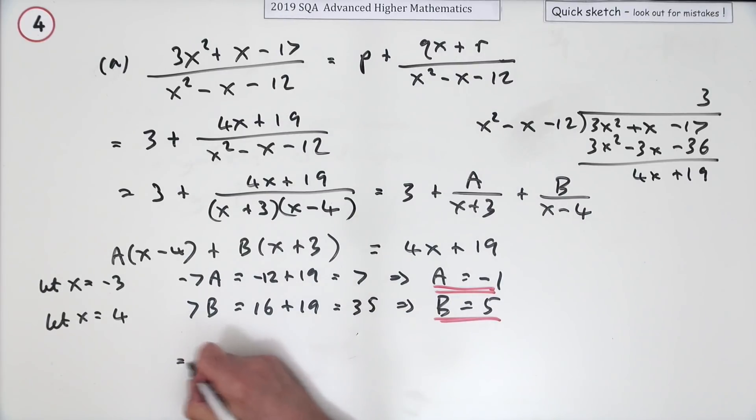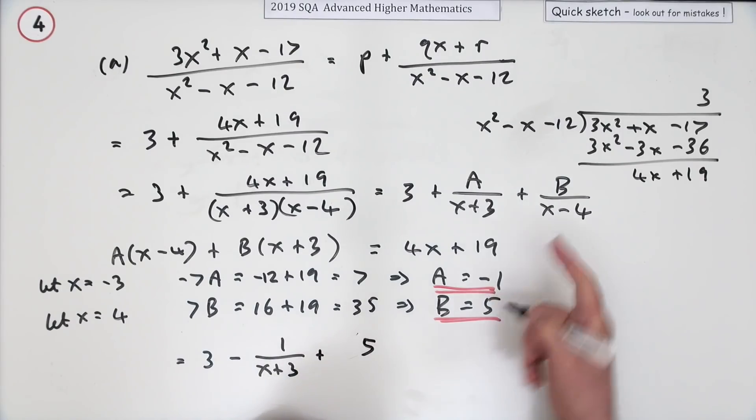Finally, what's it equal to? Well, it's 3, that's a minus - I'll put the minus outside - minus 1 over x + 3, plus, and B was 5, and B was over x - 4, over x - 4.